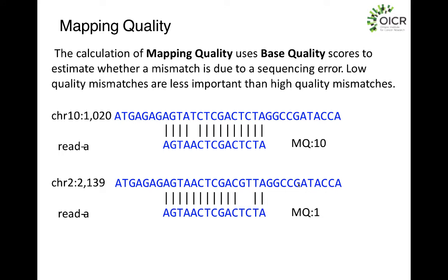If you have lower base quality scores at a mismatch, you give it lower penalties. If the rest of your alignment has high base quality scores, your mapping quality goes higher. The highest mapping quality you can have is 60 — that's the upper threshold. The probability works the same way: it's 1 over 10 to the power of negative whatever the score is, so a score of 20 means a 1% probability of a mismatch versus 10% for a score of 10.